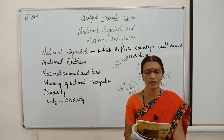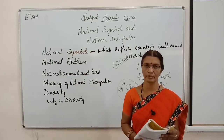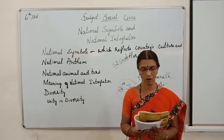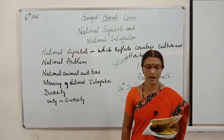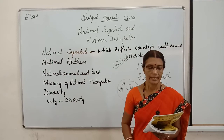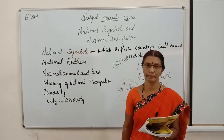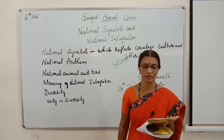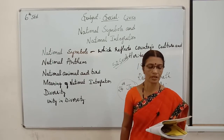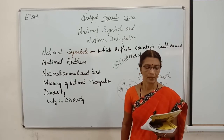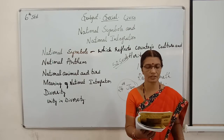Next, national animal and national bird. Tiger is our national animal — it is attractive and its physique is strong. The peacock is our national bird. Its feathers at the top of its head look like a cap, which is attractive. The peacock is a very beautiful bird and is our national bird.